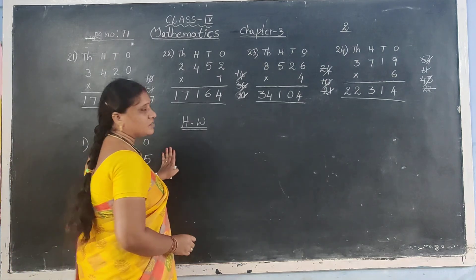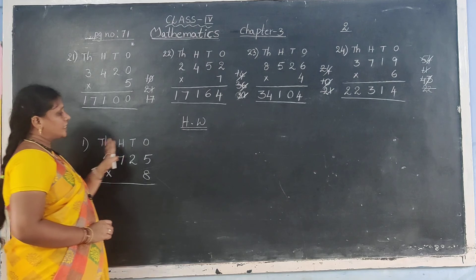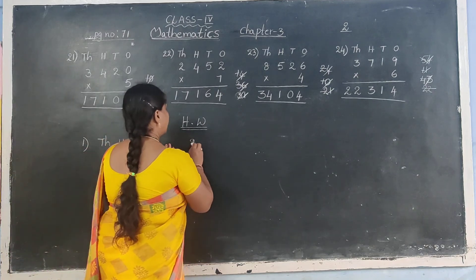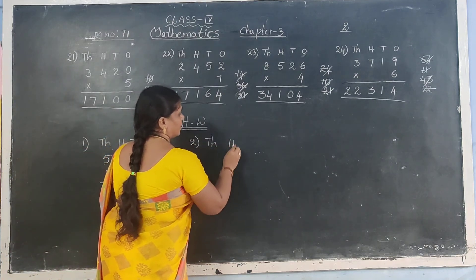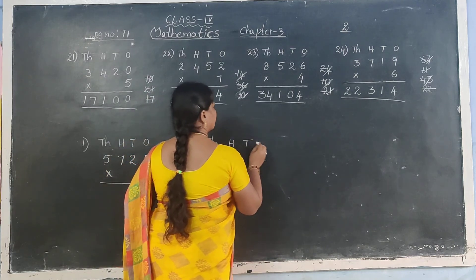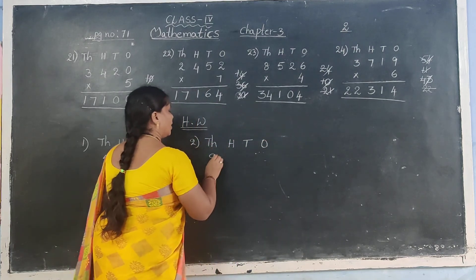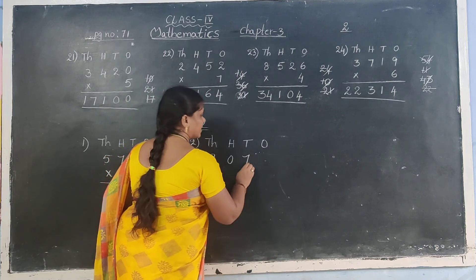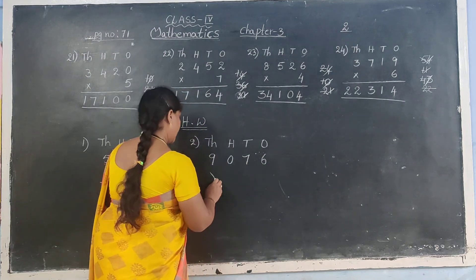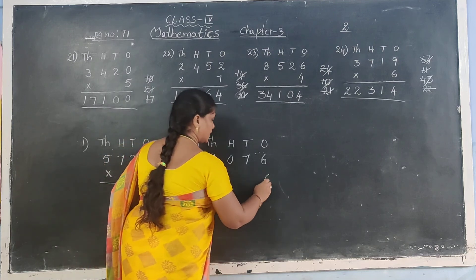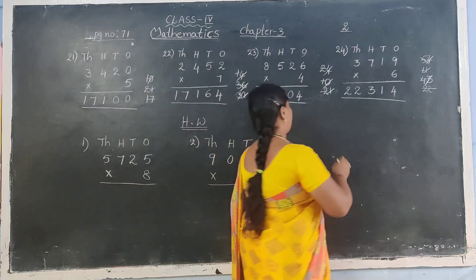Next, leave some gap. Here also first we can take the gap. Next, leave some gap. Enter second sum: 1000s, 100s, 10s, 1s. 9,076 into 6. Okay? Next, leave some gap.